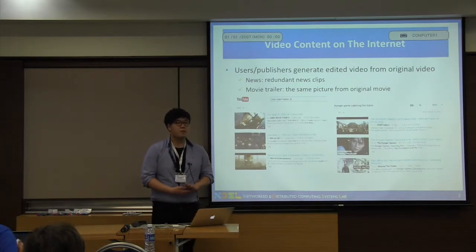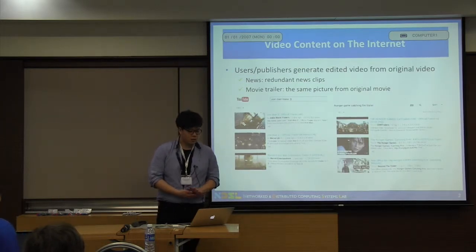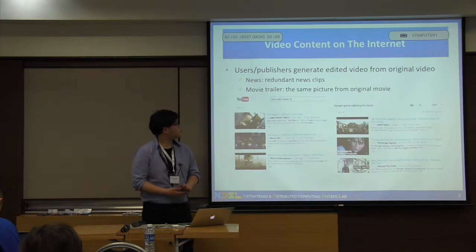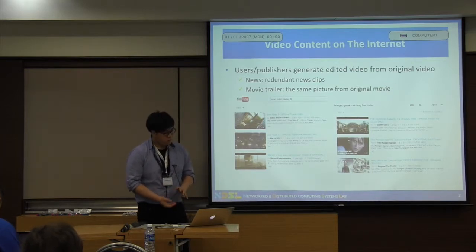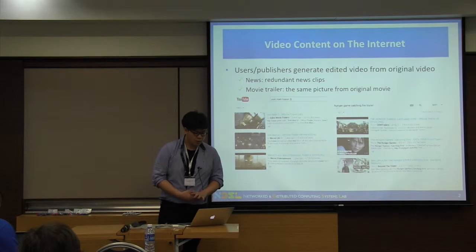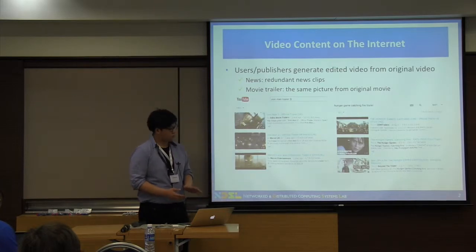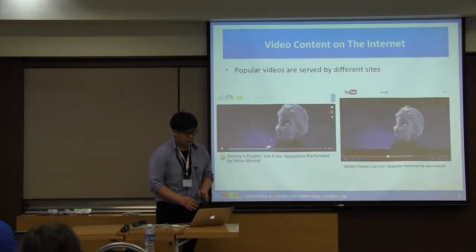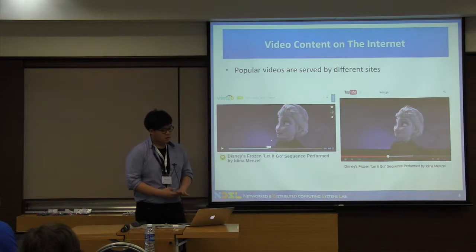Video has already become a dominant traffic on the internet. When we look into the video content distribution, we can see two big trends. First of all, there are lots of partially overlapping content. Users or content publishers generate video which is edited from the original video. For example, there are redundant clips in news content, and you can see partially overlapping content between movies and movie trailers.